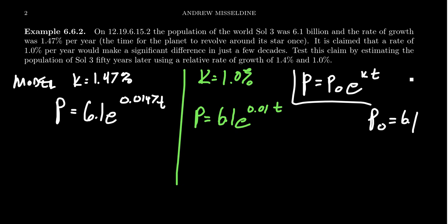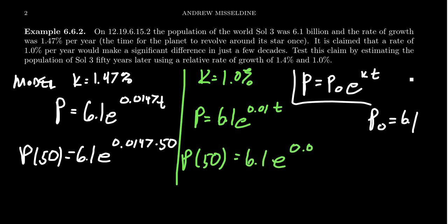And so then we wanted to make the test. How different is the population 50 years later? We're going to calculate the population. We need to compute P of 50 for these two different models. So we take 6.1 times E to the 0.0147 times 50. That's the first one. And then for the second one, we have to compute the value P of 50, which is going to be 6.1 times E to the 0.01 times 50. So it's the growth rate that's different between them.